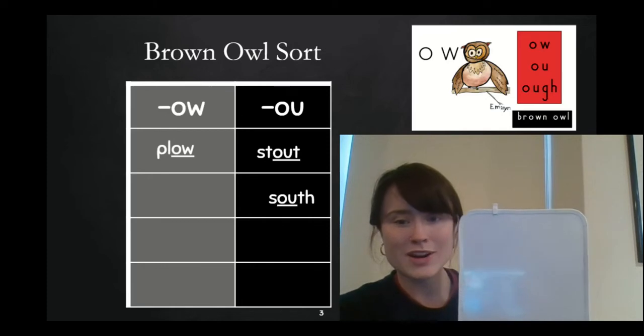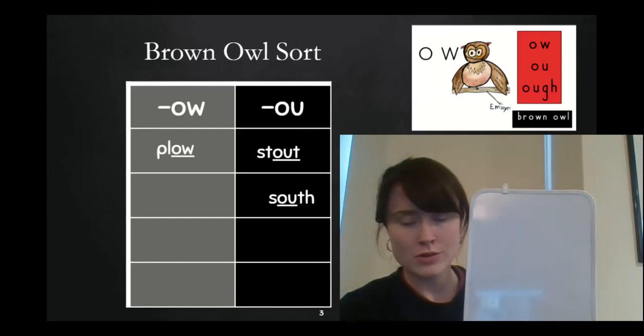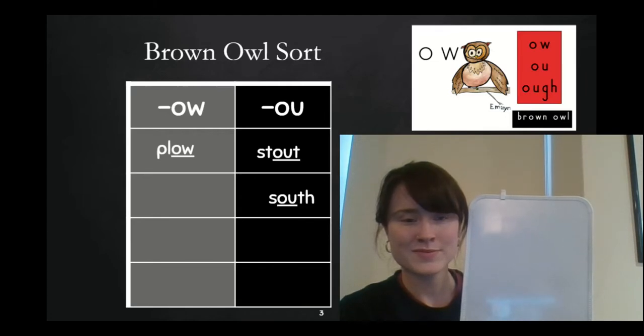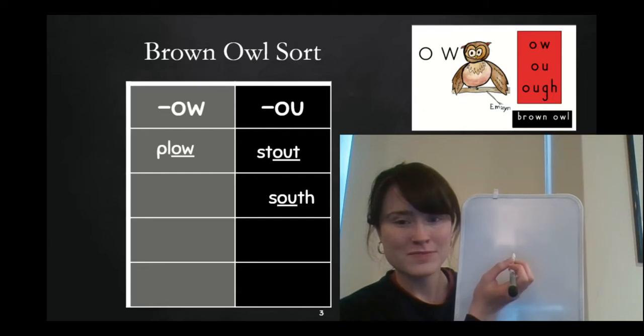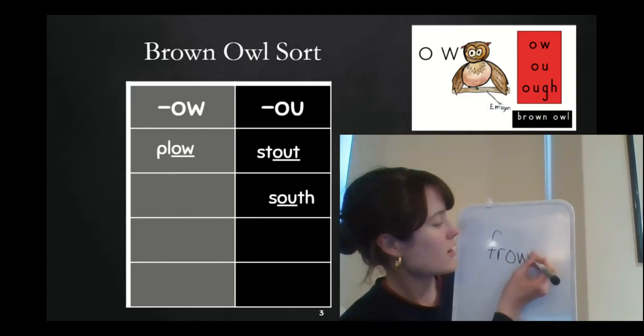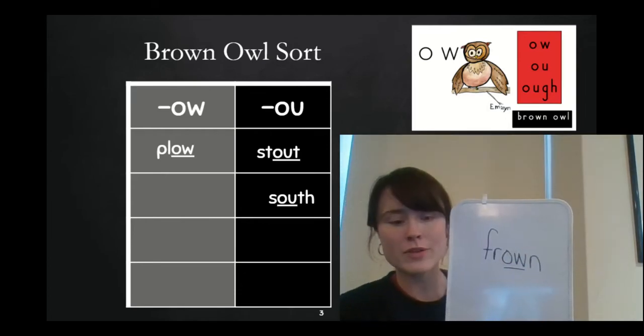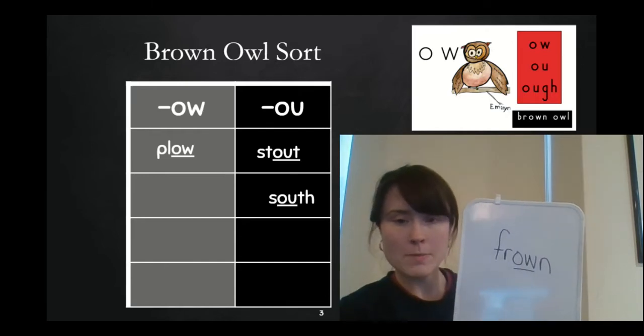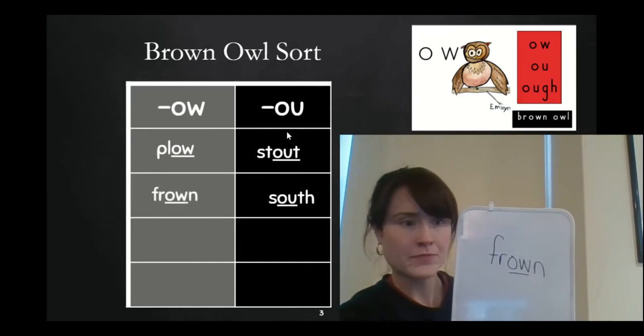All right. Our next word is frown. I don't like it when I see my Georgetown friends with a frown. Build the word frown. I see my Bucknell and UT and BU scholars being really careful as they build their words too. All right. How would you build frown? Let's try it together. Frown. We build frown with O-W. Say way to go me because I know you rocked that one.